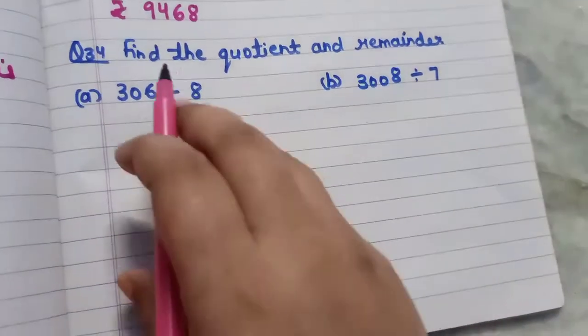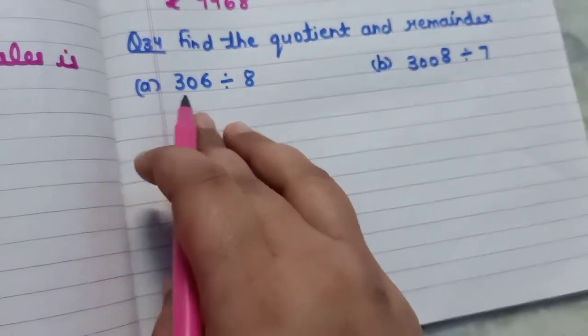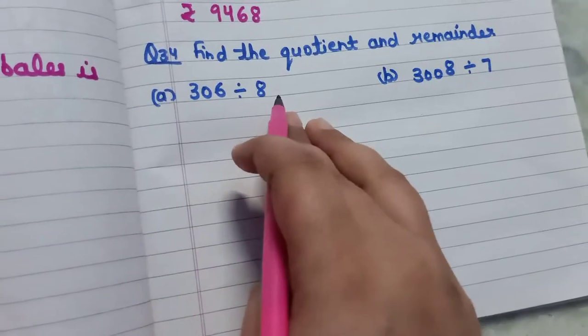Now let's do question number 34, that is find the quotient and remainder. Your A part is 306 divided by 8.